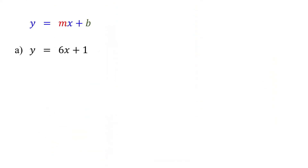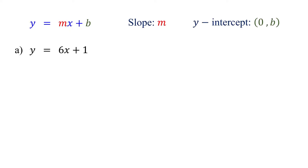In slope-intercept form, the coefficient of x represents the slope of the line. The y-intercept is the point (0, b). It is where the line crosses the y-axis, and at this point, the x-coordinate is always 0. Our first example is in slope-intercept form.